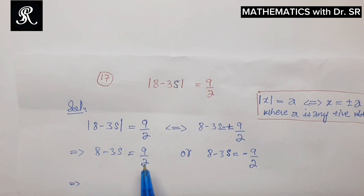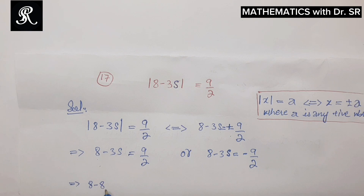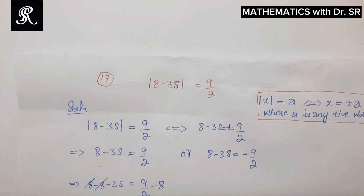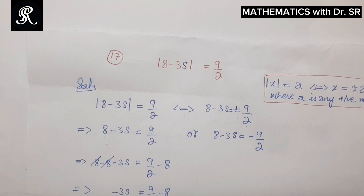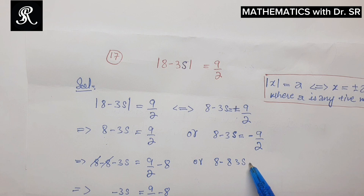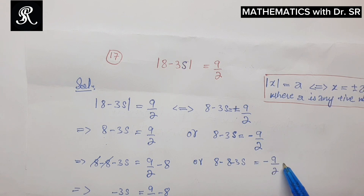In order to simplify, we will shift this constant to the right side. We subtract 8 from both sides. On the left side we get negative 3s, and on the right side we get 9/2 minus 8. Similarly for the other equation, 8 minus 3s is equal to negative 9/2 minus 8.